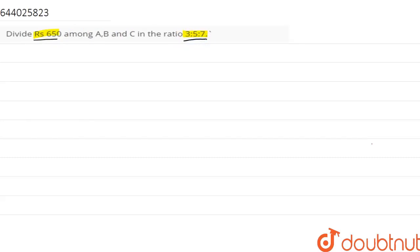Now here, the total amount is given as 650, and A:B:C ratio is given as 3:5:7.